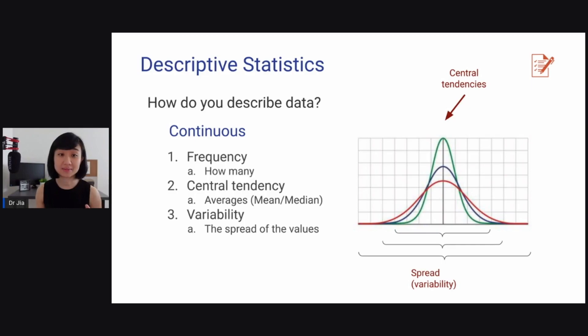How do you describe data? If it's continuous, we think about three things. First is the frequency, that means how much. Number two, we think about central tendency, like how much they are in the middle. The averages in terms of mean or median. And the third concept is variability or the spread of the values. And so look at this figure here. The middle here where I have the arrow is the central tendency. This is where the median is or the mean is. And at the bottom here, this range, this is the spread or the variability of the data.